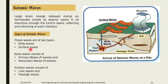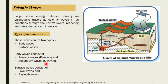Seismic waves are of two types: body waves and surface waves. Body waves consist of two types: one is primary wave (P wave) and another is secondary wave (S wave). Surface waves consist of Love wave and Rayleigh wave.